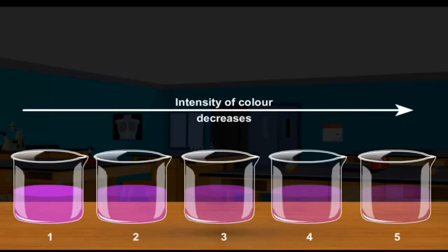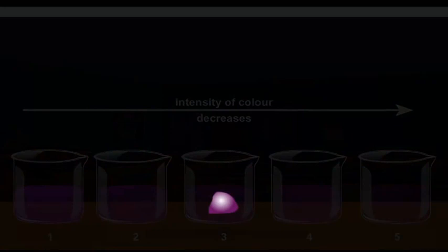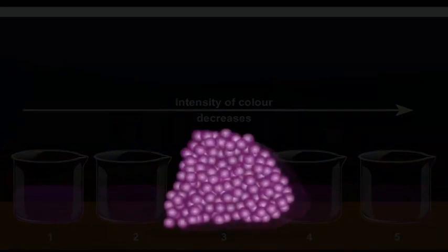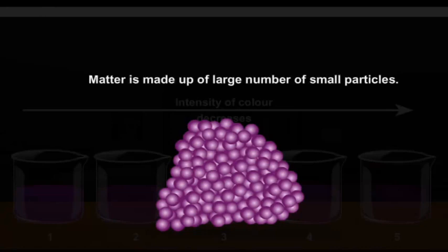That is, two to three crystals of KMnO4 contain millions of particles that can be transferred from one beaker to another, causing the water in each beaker to turn pink in color. So we can conclude that particles of matter are very small in size, or we can say matter is made up of a large number of small particles.